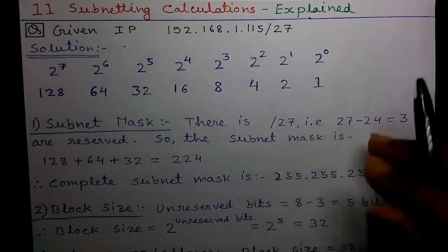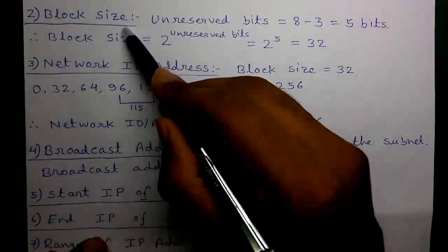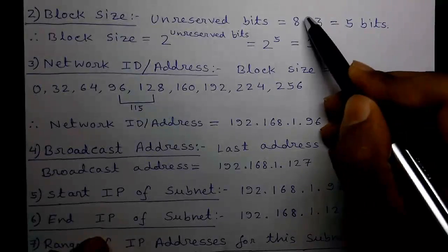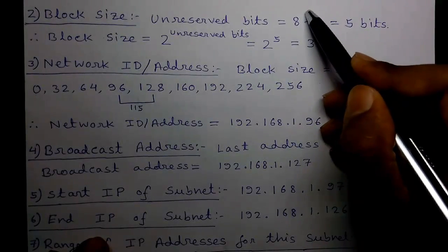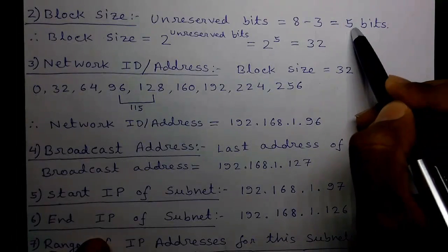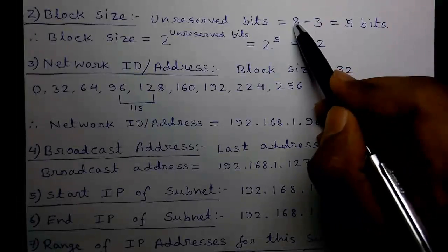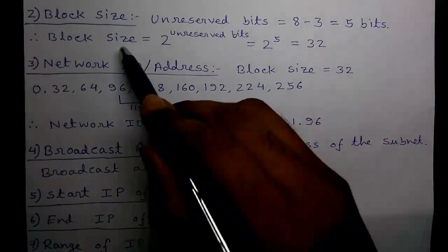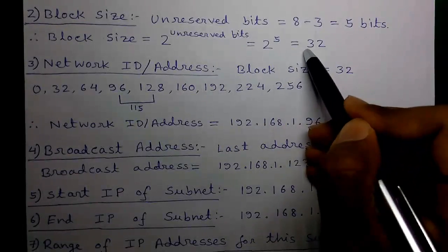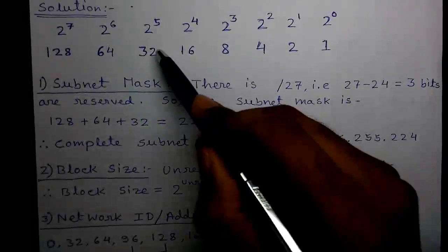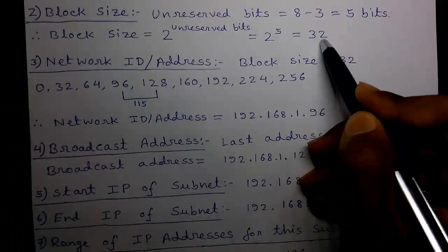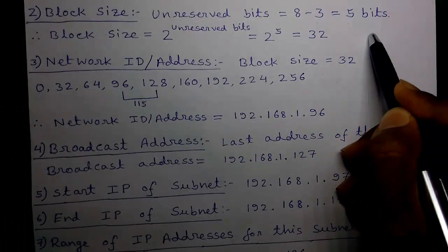Second calculation: block size. The unreserved bits in the fourth octet are 8 minus 3 equals 5 bits, since the fourth octet is the variable octet. The block size equals 2 to the power of unreserved bits, which is 2 to the power 5 equals 32. You can get this value from the weighted binary chart. Our block size is 32. After finding the block size, everything becomes very easy.